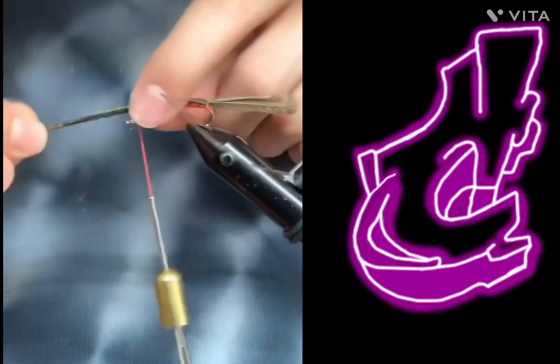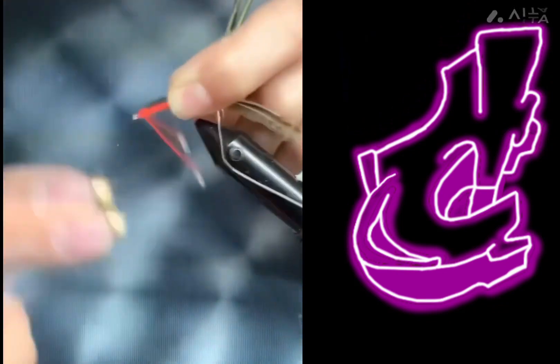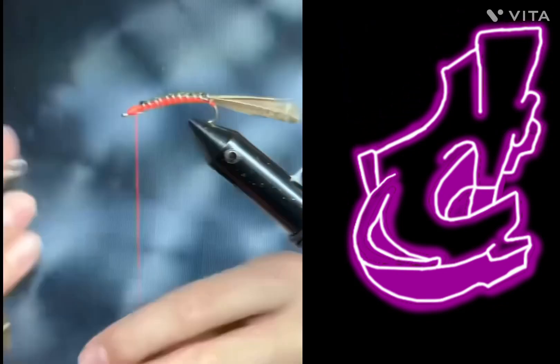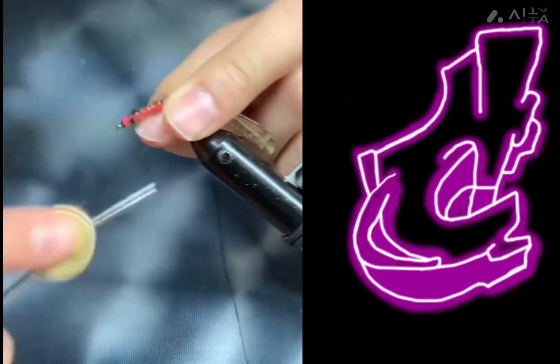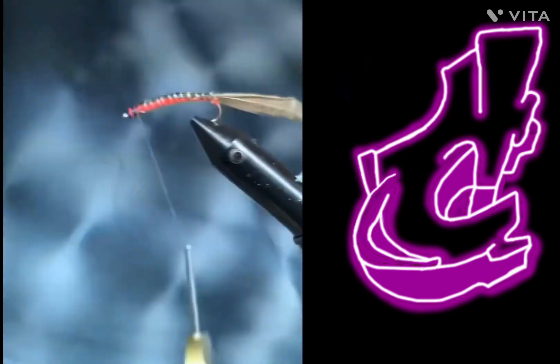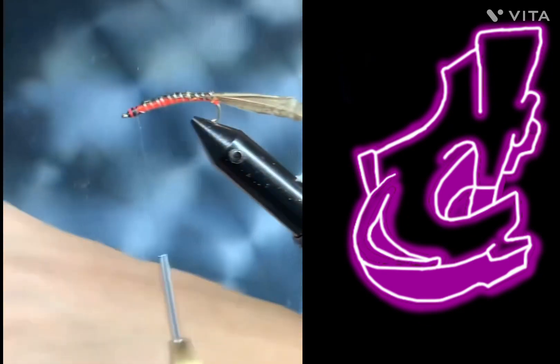Now we have added some peacock curl and we are going to fold it over and tie it down, then wrap it around with wire to give it a segmented look. Then attach some black thread. After that is complete, snip the excess free.